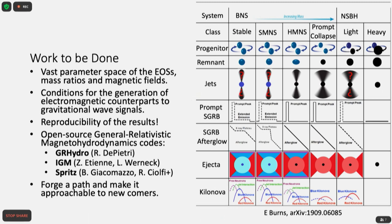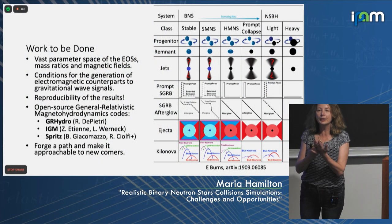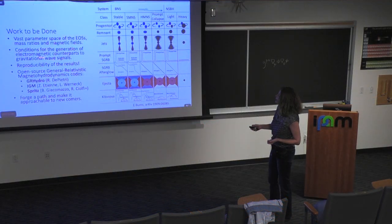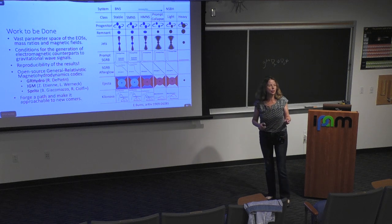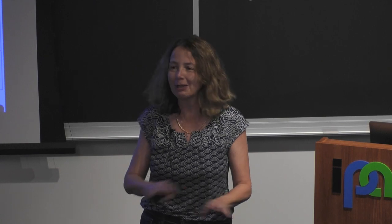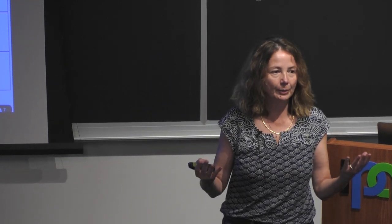There is still work to be done because there is a vast parameter space for the equation of state — we don't know exactly what it is, and we need to keep churning through equation of state models given by nuclear physicists and simulate to see what happens. The signal from a collision is ridiculously sensitive to the equation of state. We also need to know what conditions generate electromagnetic counterparts. We might have everything wrong about the magnetic field, and results from NICER suggest our guesses about magnetic field inside and outside the star might not be true.